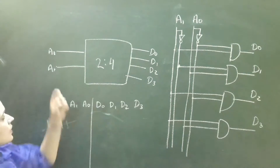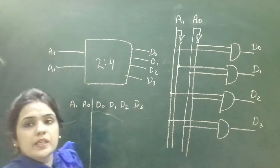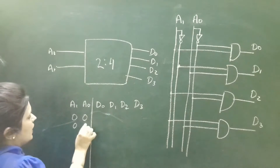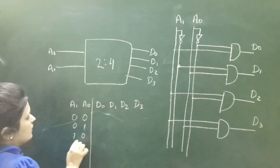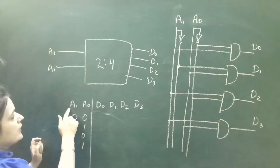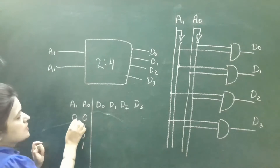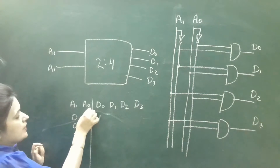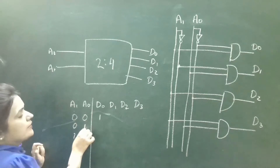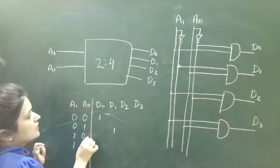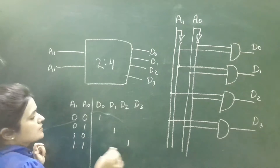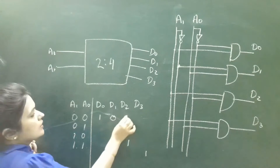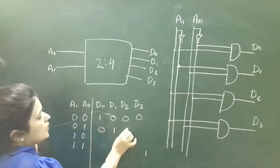A0 and A1 can have four possible values: 00, 01, 10, and 11. When the value of A1 and A0 is 00, D0 will be high. When it is 01, D1 will be high. In this case D2 will be high, and in this case D3 will be high. All the remaining outputs will be low.